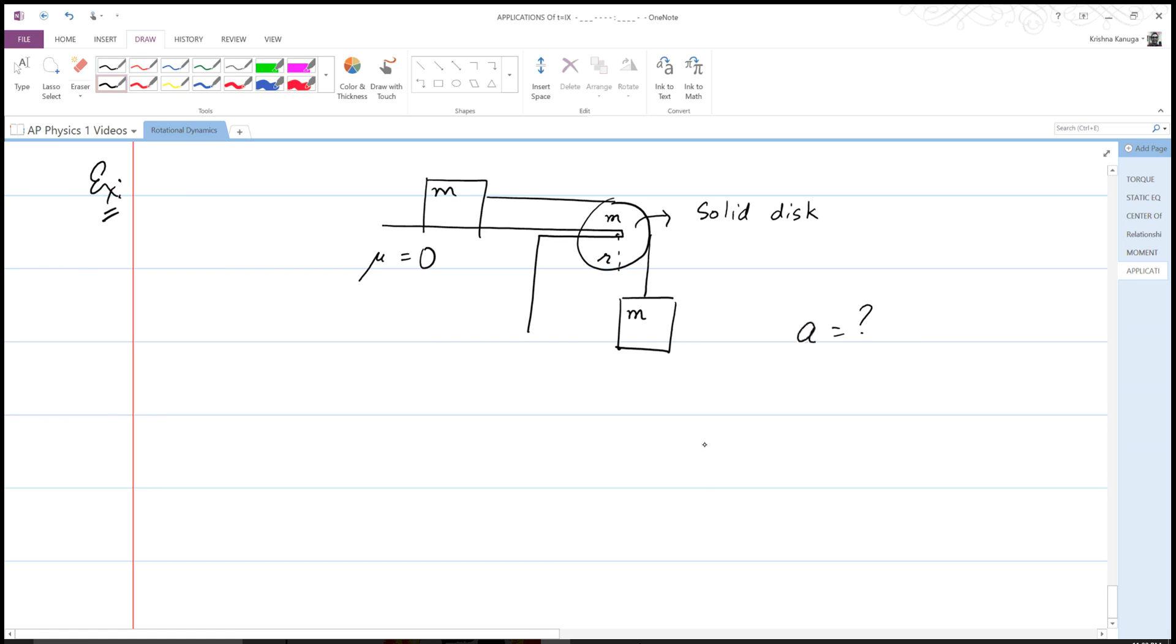So as usual, we'll draw free body diagrams. For the hanging block, I have mg down, I have T1 up, and I have ma down. For the disc, I have T1 in one direction, T2 in the other, and it causes its own angular acceleration.